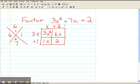This is the product of the two binomials that give me the trinomial 3x² + 7x + 2. I would write it as (3x + 1) times (x + 2).